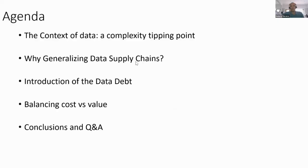Without further ado, what we are talking about today: the context in which our paper has been developed is the exploitation of data at scale happening because of digital transformation. We'll start from an understanding that we are approaching a complexity tipping point. We'll introduce the generalization of data supply chains — the mechanism through which you take data from a source and give it to a consumer to achieve value. We introduce the concept of data debt, similar to technical debt, and make considerations on balancing cost versus value. Then we'll get to conclusions and welcome questions.